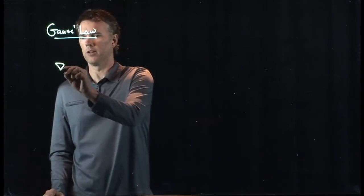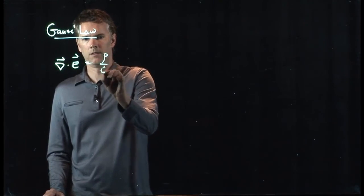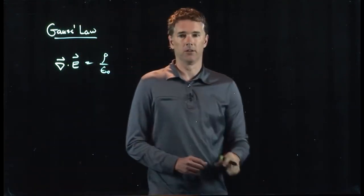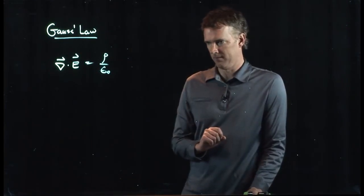And just for fun, let me show you what it looks like. That's what it looks like. Del dot E equals rho over epsilon naught.